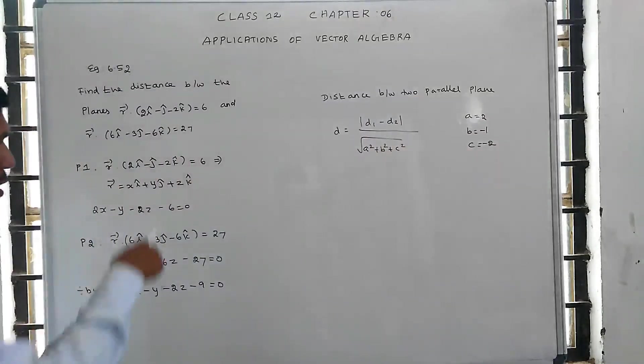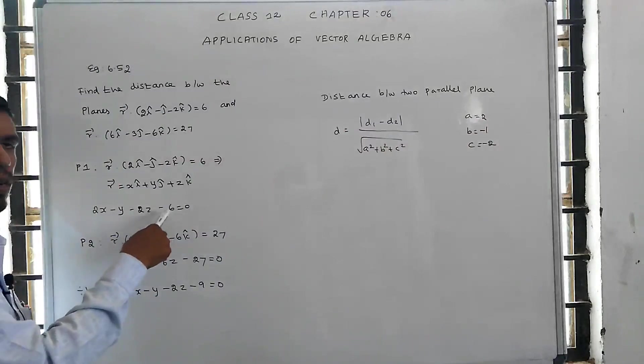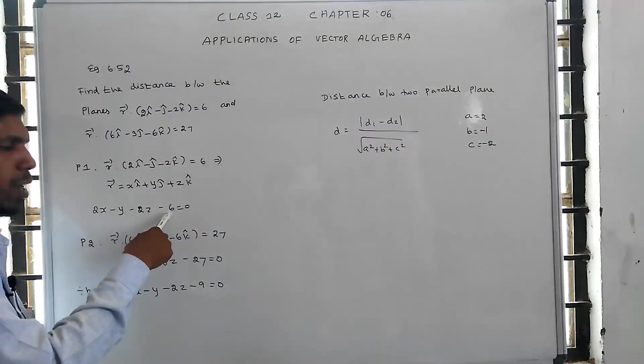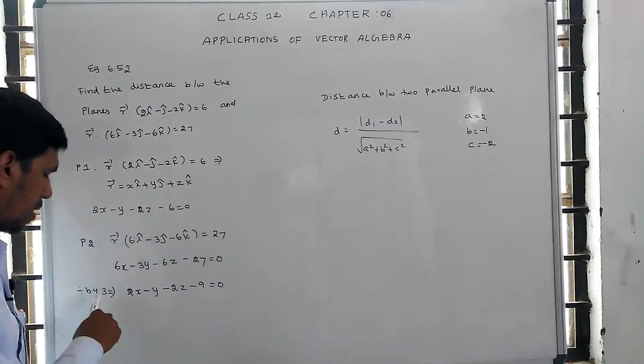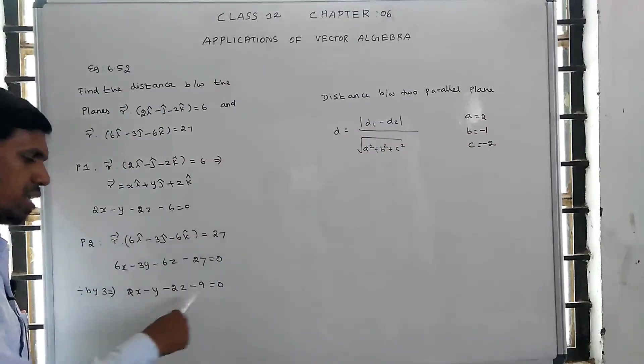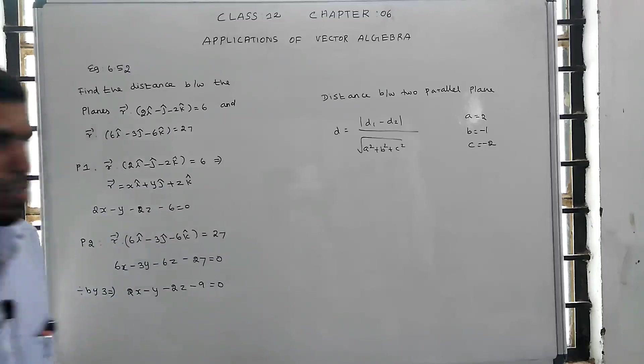D1 is the constant from the first plane equation, and D2 is the constant from the second plane equation.